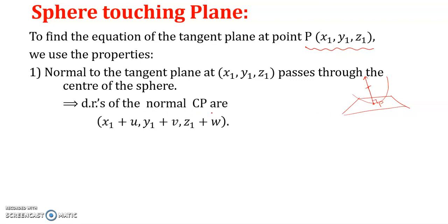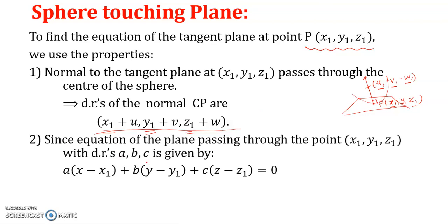Since direction ratios of the line through P and the center are needed, from the given equation we can identify that the direction ratios are (x₁ + u, y₁ + v, z₁ + w), because the point is (x₁, y₁, z₁) and the center is (−u, −v, −w). Therefore the direction ratios through these two points are x₁−(−u), y₁−(−v), z₁−(−w), giving (x₁+u, y₁+v, z₁+w). Second, the equation of a plane passing through point (x₁, y₁, z₁) with direction ratios a, b, c is: a(x−x₁) + b(y−y₁) + c(z−z₁) = 0. Using these two properties we can identify the equation of the plane.